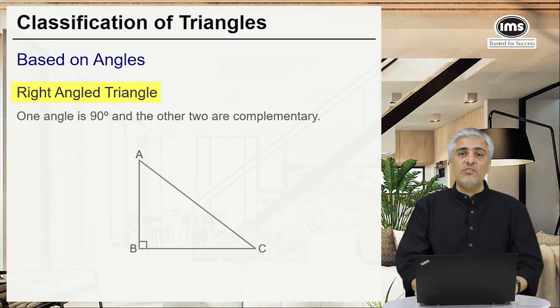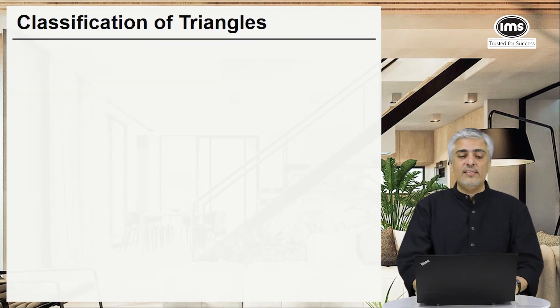In this figure, if you look, angle ABC is 90 degrees. It will automatically mean that angle A plus angle C will have to be 90, and hence they are complementary angles.